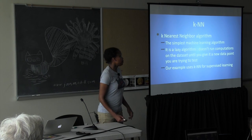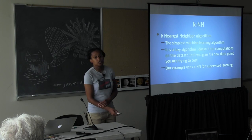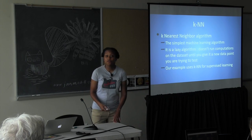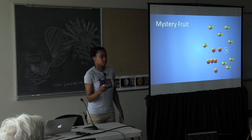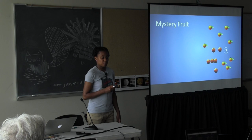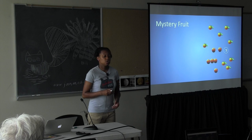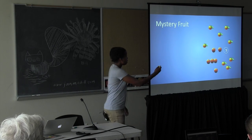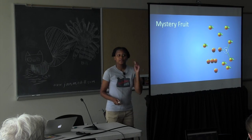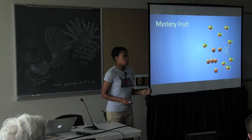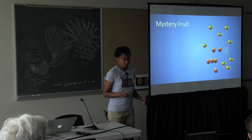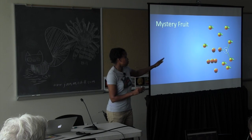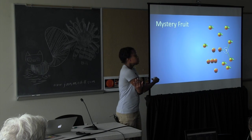KNN is considered a lazy algorithm, which means that it doesn't run computations on your data set until you introduce a new data point to it — it's not eager. Our example will use KNN for supervised learning. Mystery fruit: let's say that you have a piece of fruit that you're not sure what the identity is — thus mystery fruit. In KNN, you're going to take the three closest neighbors, the fruit that is closest in feature to your mystery fruit.